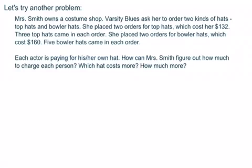So, on this one, Mrs. Smith owns a costume shop. Varsity Blues asks her to order two kinds of hats, top hats and bowler hats for an upcoming performance. She placed two orders for top hats, which cost her $132. Three top hats came in each of those orders. She placed two orders for bowler hats, which cost $160. Five bowler hats came in each order.